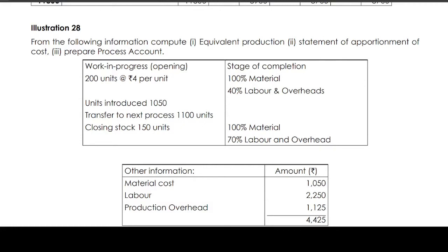Illustration 28. From the following information, compute equivalent production statement of apportionment, apportionment of cost, and prepare cost process account. Opening work-in-progress is 200 units at 4 rupees per unit. Units introduced is 1050. Transfer to next process is 1100 units, closing stock is 150 units. Material cost is 1050, labor is 2250, production overhead is 1125, total 4425.